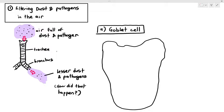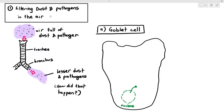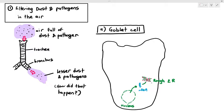So how does the goblet cell actually release this mucus? It involves a few different chapters. In the goblet cell, they have a nucleus, and inside the nucleus they have chromosomes which contain genes. Very specific genes will undergo transcription, where it produces the mRNA. The mRNA will then move to the rough ER, where it undergoes translation, and polypeptide chains are produced. This step — transcription and translation — is part of protein synthesis.